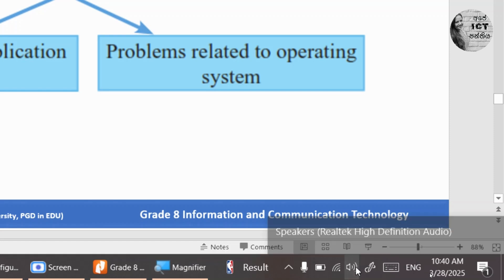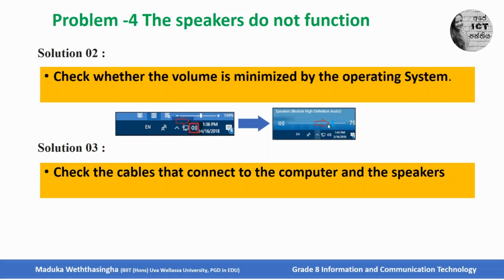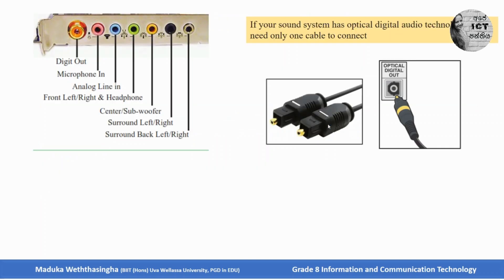Click on the speaker icon in the right bottom corner of the taskbar. Then you can increase the volume of the speakers via the operating system. If this second solution is also not working, go to the third solution: check the cables connected to your computer and the speakers. If your sound system has optical digital audio technology, you need only one cable to connect; if not, you need two cables. You can identify the audio ports for this.